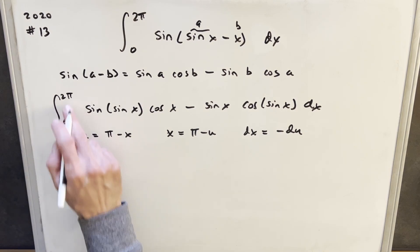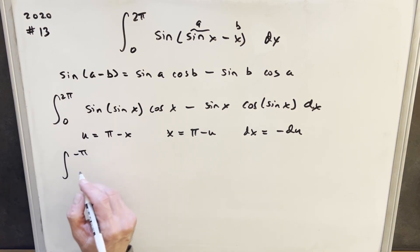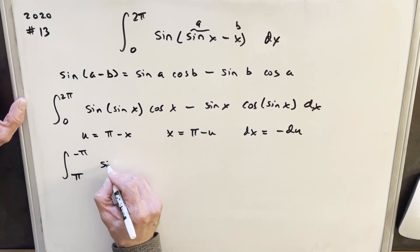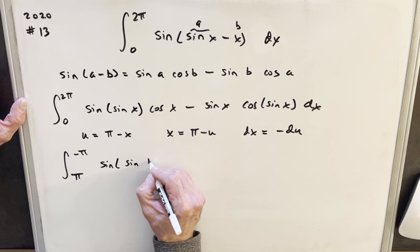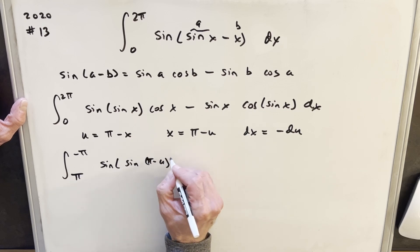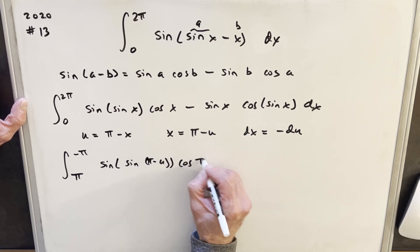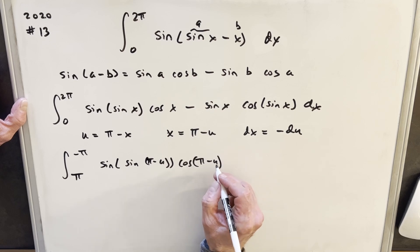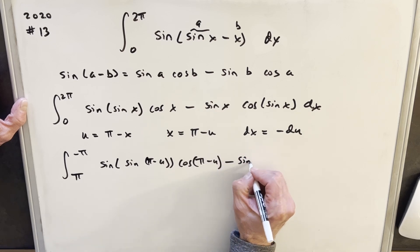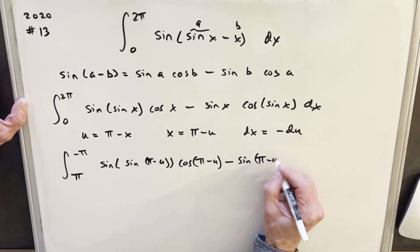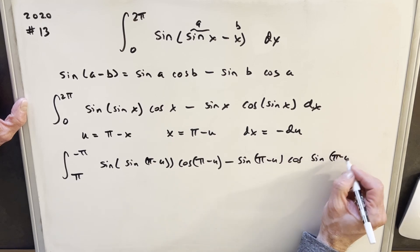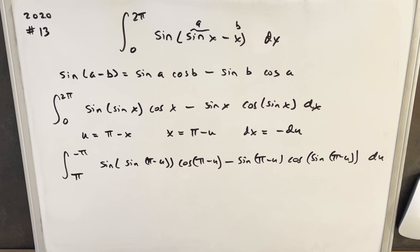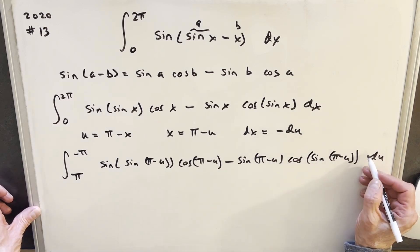I'll make this substitution. Plugging 2π in here, we're going to have a minus π. Plugging 0 in, we're going to have π. Then we're going to have sine(sine(π minus u)), so your expression is going to get even longer now. We're going to have cosine(π minus u), then minus sine(π minus u) cosine(sine(π minus u)). And one thing I can't forget — we have a minus sign on this du.